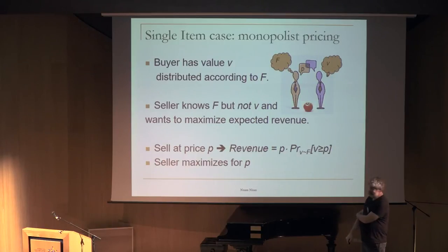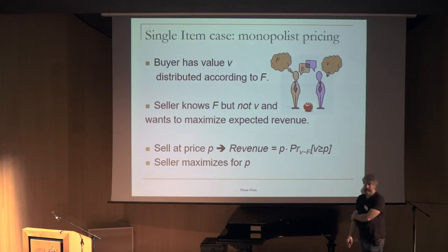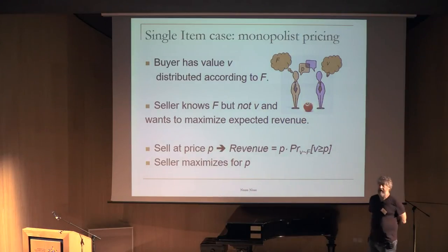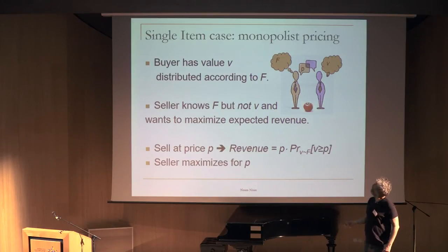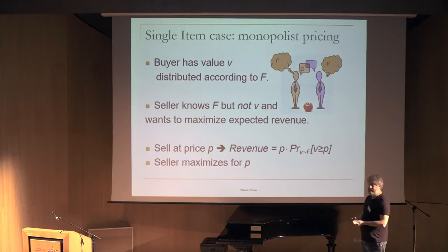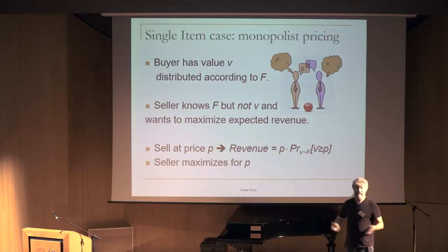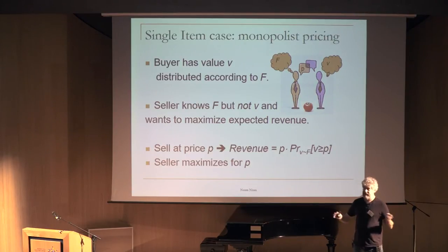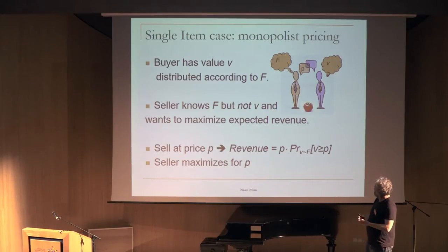Let's start with a single item. The simplest way — what you learn in Econ 101 — is called monopolist pricing. If I as a seller put a price p on the item, the buyer buys if their value v exceeds p. The probability of buying is Pr[v ≥ p] and my expected revenue is p times that probability. Everyone is risk-neutral; I care about expected revenue.